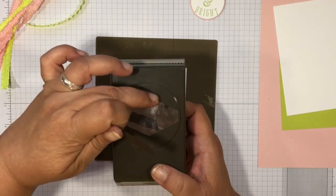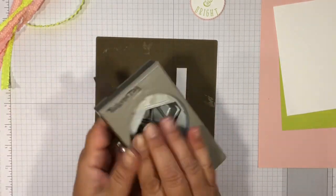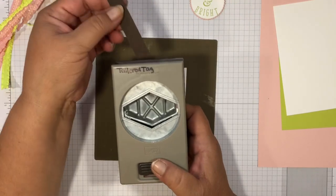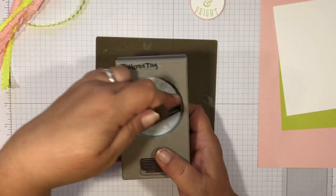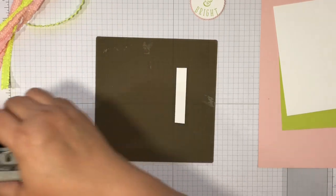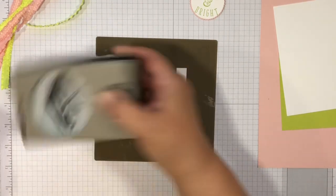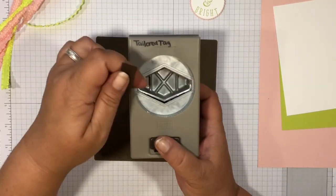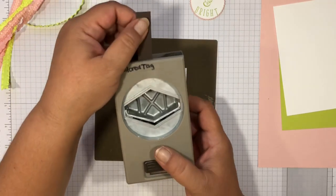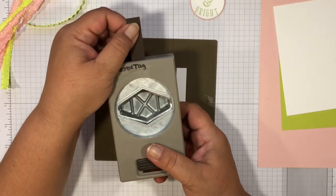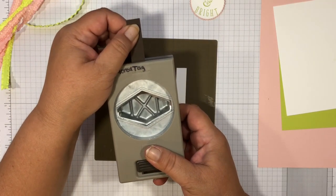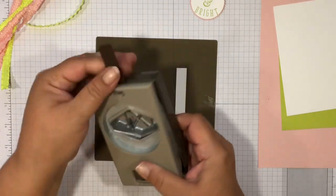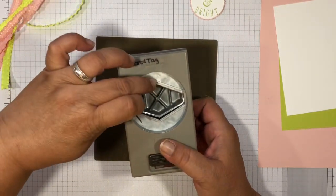We're going to be using our Tailored Tag to create our banner and you're going to punch using this area right here. We're just going to turn it around. You could do up to a three inch piece of cardstock with that. We're just going to go to the very edge and I'm just going to punch it.